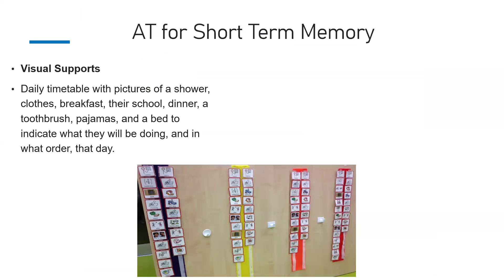For short-term memory supports, visual supports are crucial. An example is a daily routine chart showing the sequence of a day — shower, breakfast, toothbrush, pajamas, bed — in simple pictures. This can also be used for workplace tasks: if a task takes five steps, you put five pictures showing each step. If the person forgets what comes after a step, they look at their visual aids and see what is next.